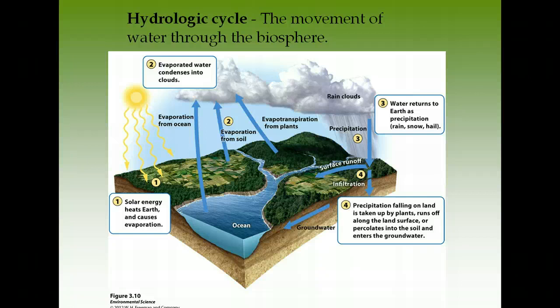After precipitation falls, water is either absorbed by the soil and percolates down into groundwater and aquifers, or it moves off as runoff — flowing across the land into streams and rivers, and ultimately to the ocean, which is the ultimate pool of water. When the sun hits the ocean water, evaporation starts again and the cycle repeats.